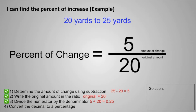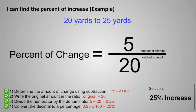The final step: convert the decimal to a percentage. We convert a decimal to a percentage by multiplying by 100 and then adding a percent sign. Since the first value is smaller than the second value, we know that this will be an increase. So the final solution is a 25% increase.